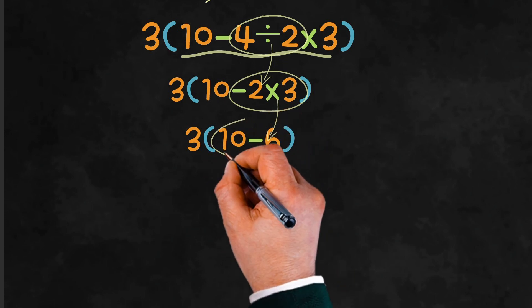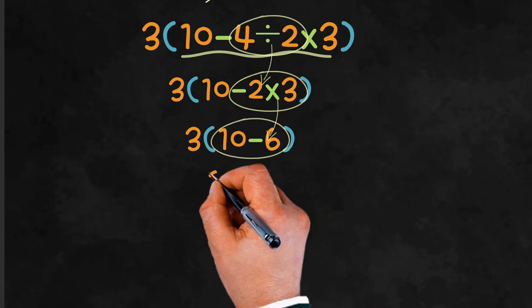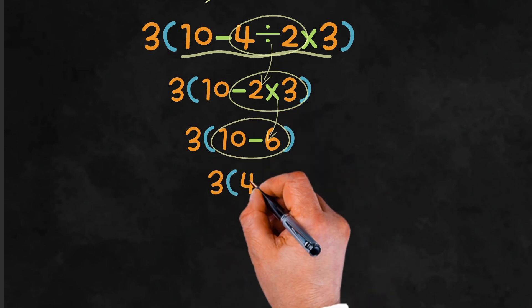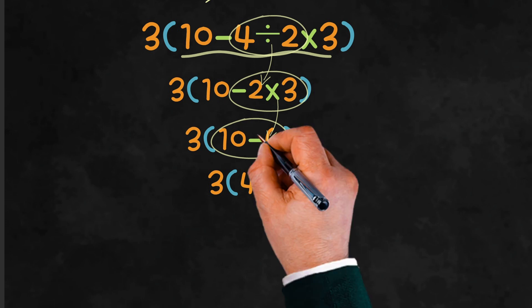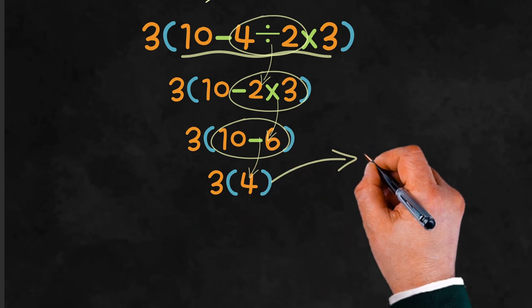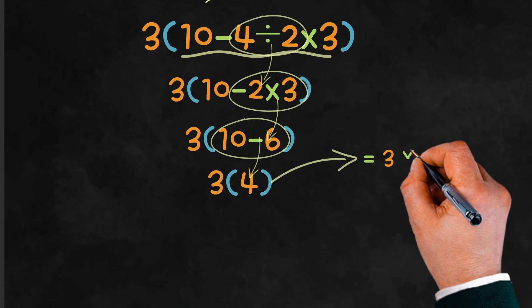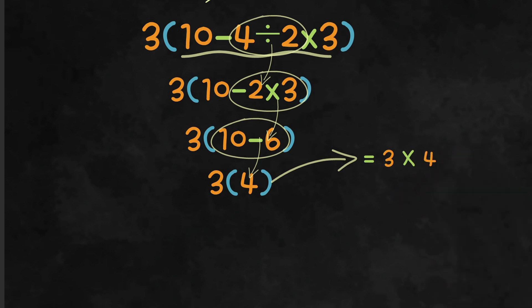Now, subtract 6 from 10. This gives us 4 inside the parentheses. Lastly, multiply 3 by 4. 3 times 4 equals 12.